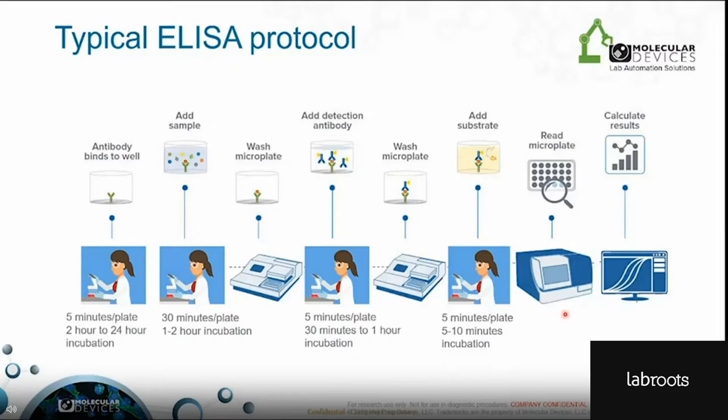Following reading the plate, data analysis is done to quantify the unknown samples compared to the standard curve. When assessing one 96-well microplate, this protocol and the required hands-on time may seem doable. However, as your throughput increases, this manual workflow is not scalable. In the next slides, we will share different work cell solutions and their benefits for automating your ELISA protocols.